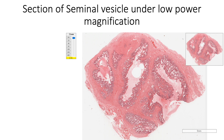Seminal vesicles are a pair of outpouchings from the ampulla of the vas deferens. These are located in the pelvis between the base of the urinary bladder and the rectum. The lower pole of the seminal vesicle continues as a short straight duct which joins with the ampulla of the vas deferens to form the ejaculatory duct.